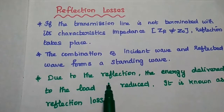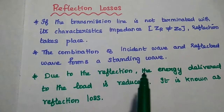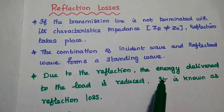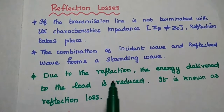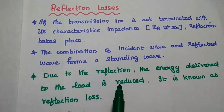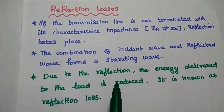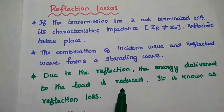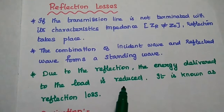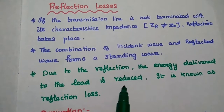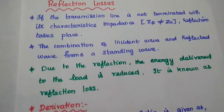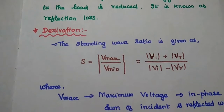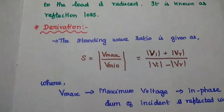Because of the reflection, there may be some reduction in the power delivered to the load, and that is known as reflection loss. Due to the reflection, the energy delivered to the load is reduced from its original value — that is known as reflection loss. Now we are going to analyze the reflection loss value in terms of power.